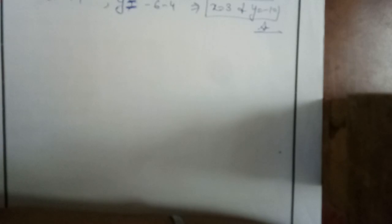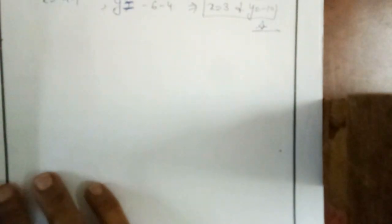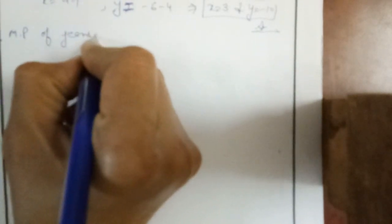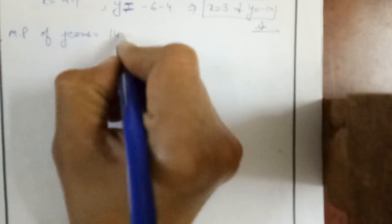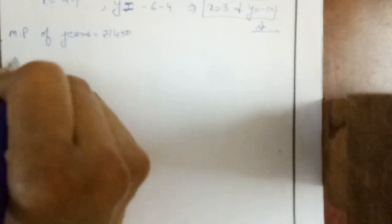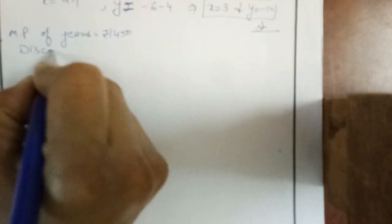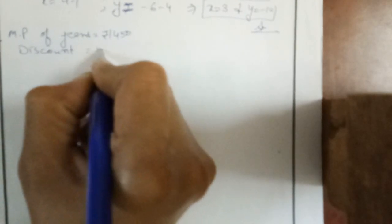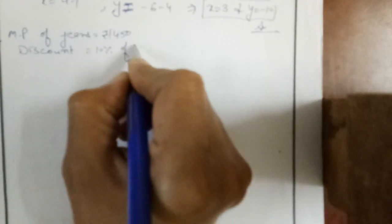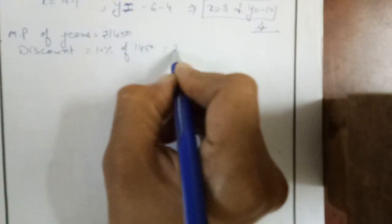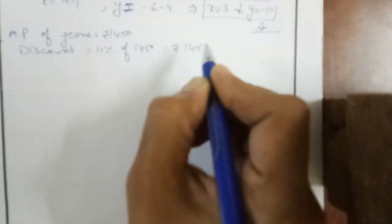We will find the answer. Given: marked price of jeans is equal to Rs. 14.50. Discount is 10% of the marked price. Finding this value: discount comes to Rs. 1.45.